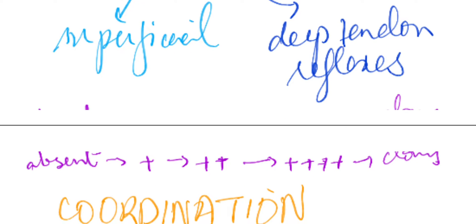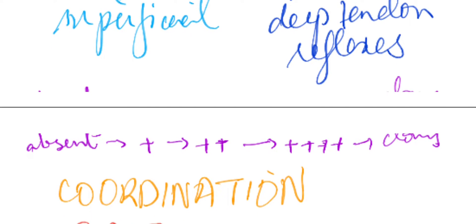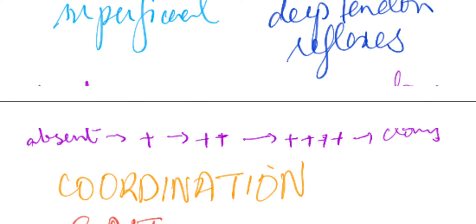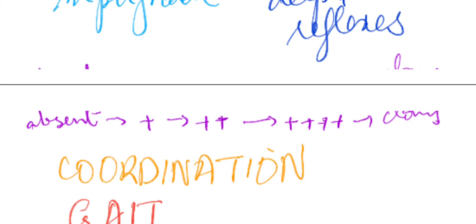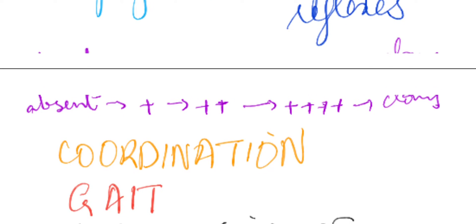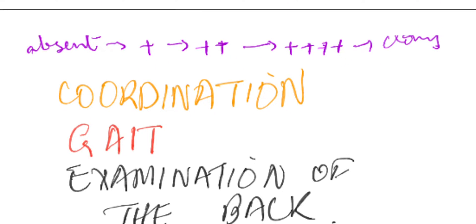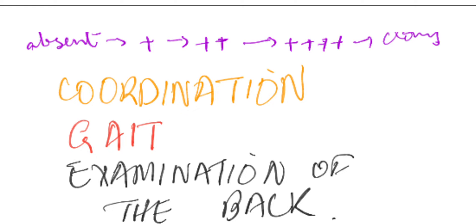The grading obviously is: absent, one plus for diminished reflexes that come on reinforcement maneuver, and two plus for normal, three plus for exaggerated reflex, and clonus that has sustained contraction.